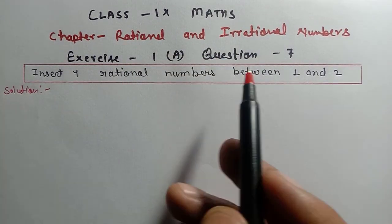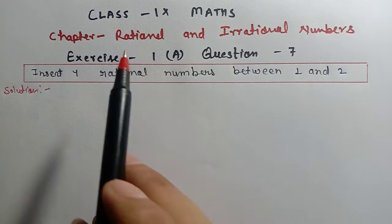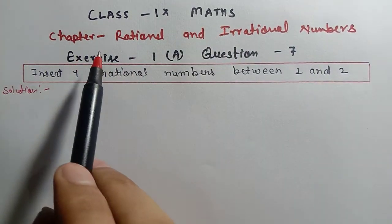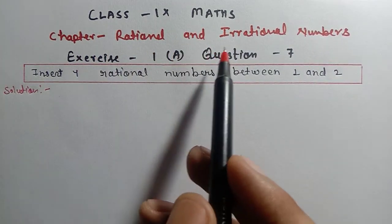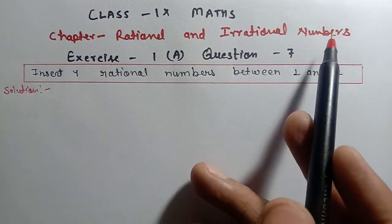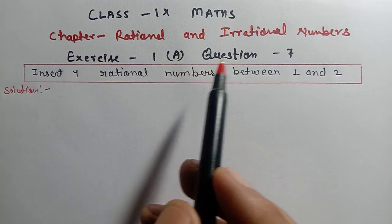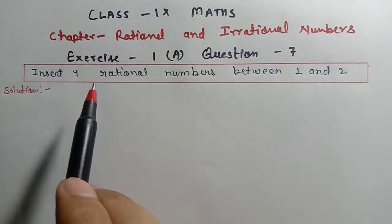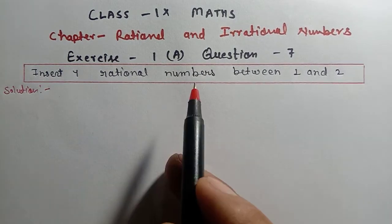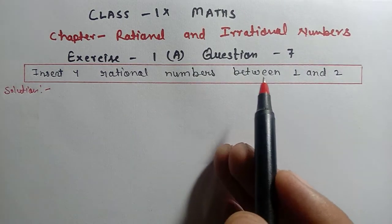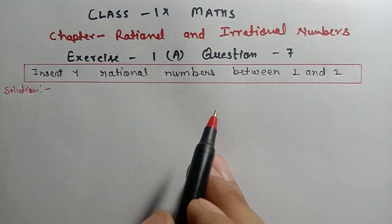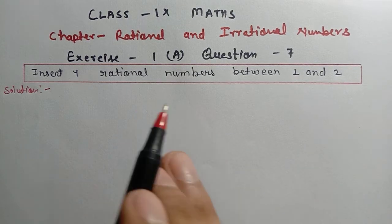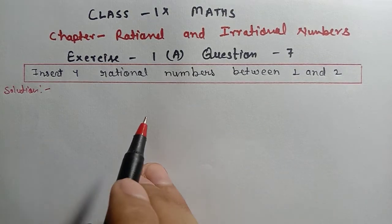Hello students, welcome to this channel. Today I am teaching Class 9th Maths ICSE Board Chapter Rational and Irrational Numbers. We will solve Exercise 1A question number 7. Previous questions 1 to 6 are already solved — watch the previous videos so that you can understand well.